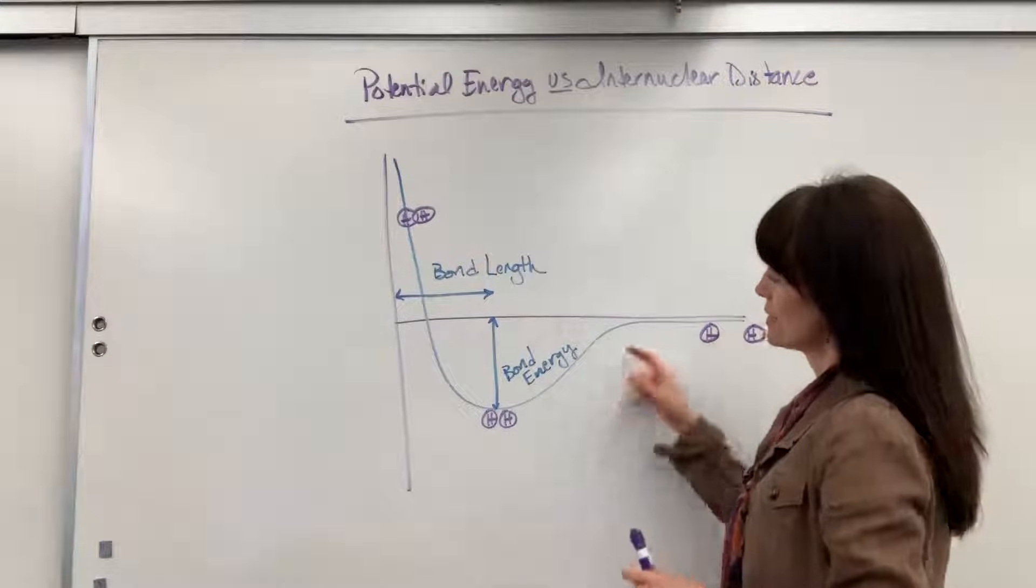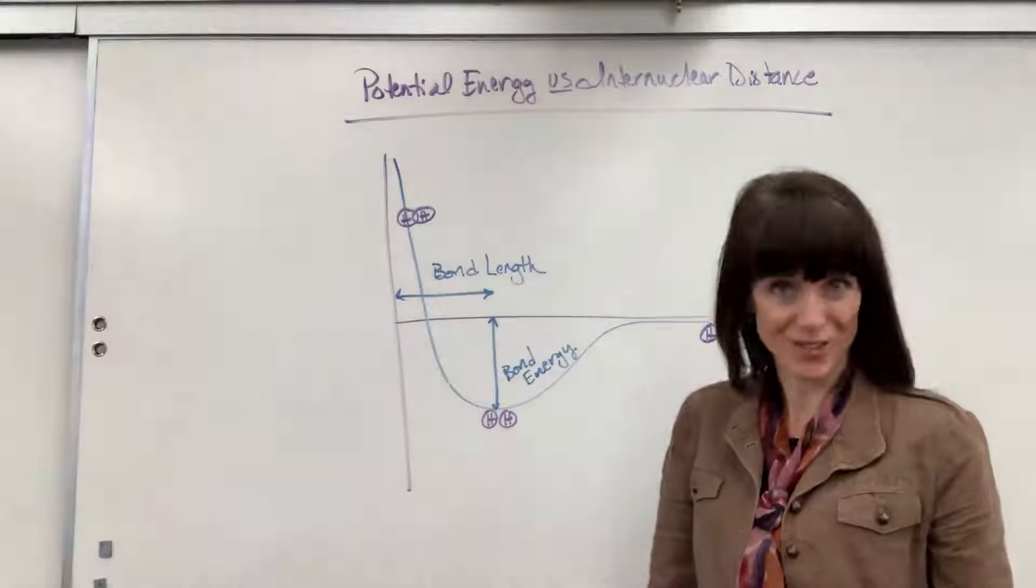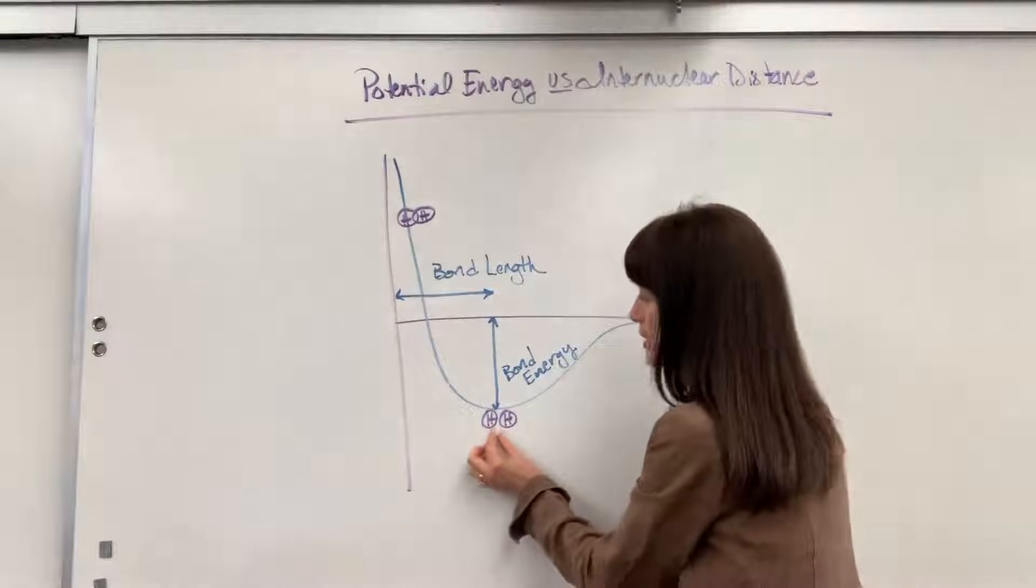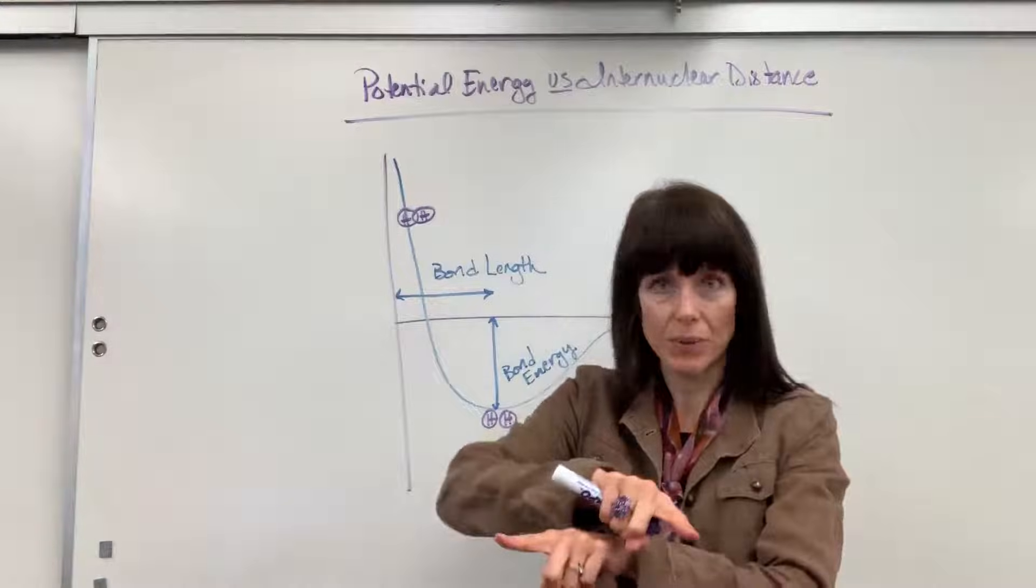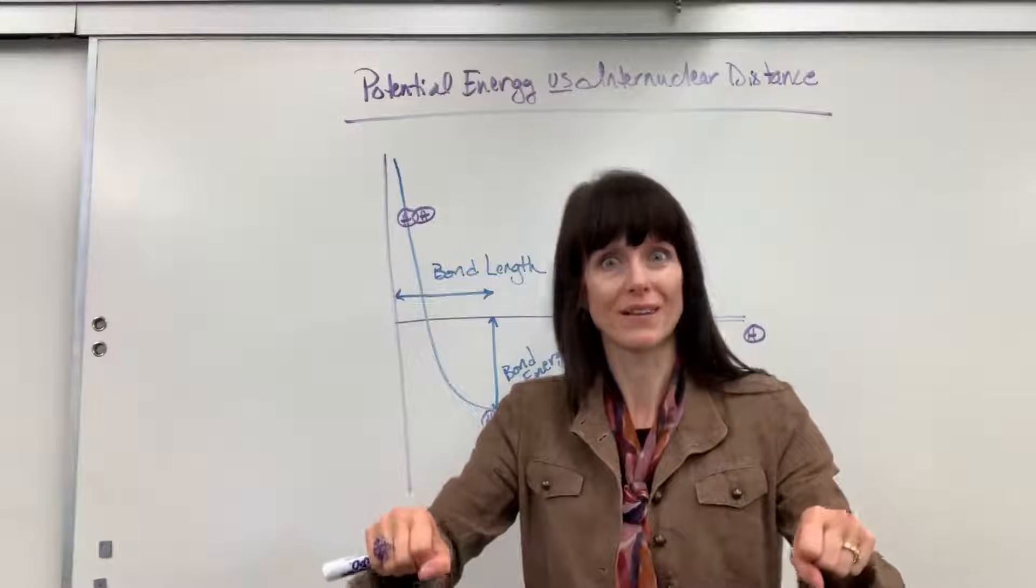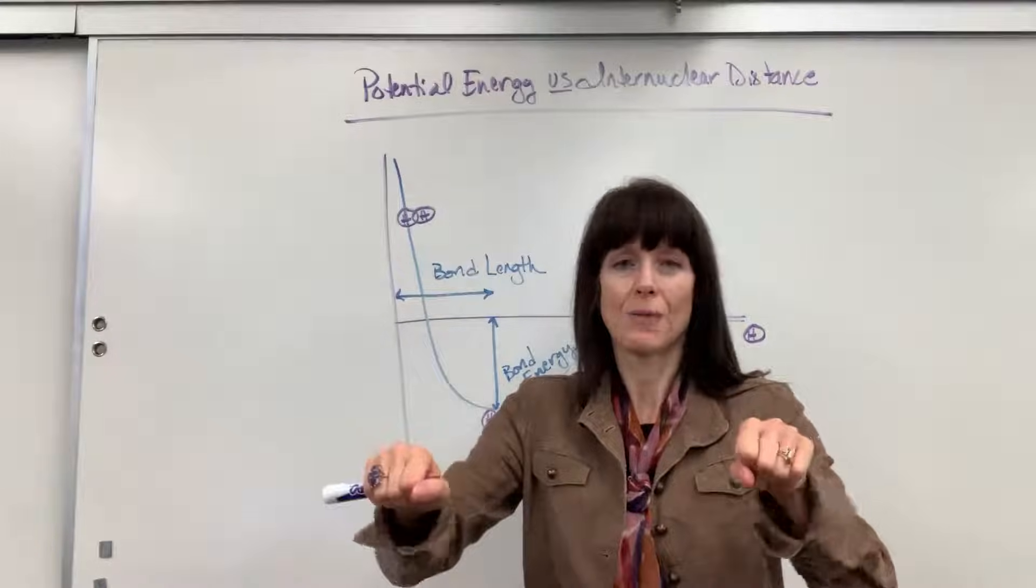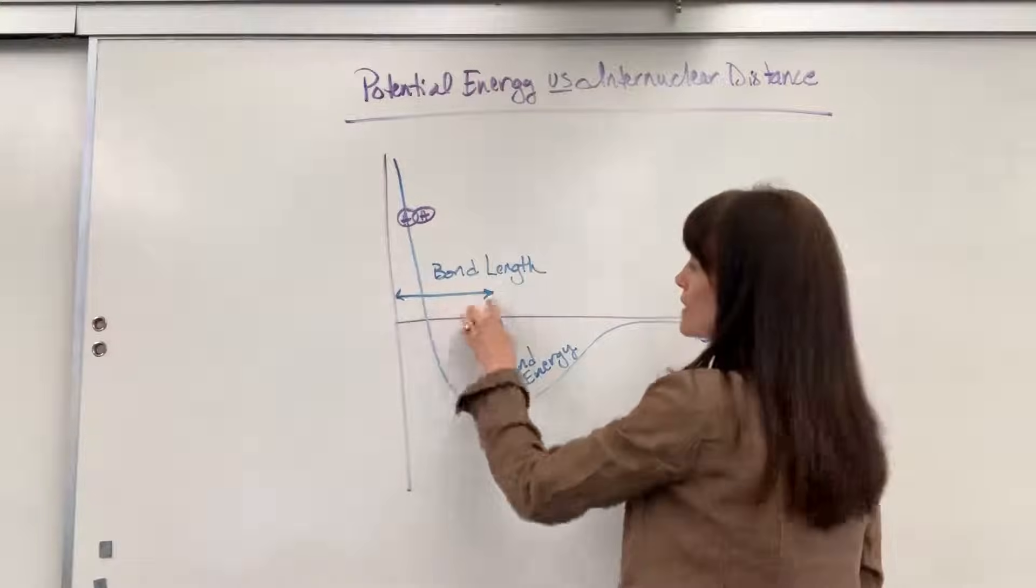Now look at this. There's a potential energy right here, and this shows the bond energy, the energy between this sweet spot where they're attracted. The electrons are attracted to the protons, opposite sides. But the protons aren't repelling each other. There's this perfect amount of attraction-repulsion combination happening right there.